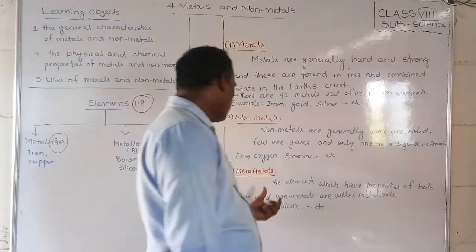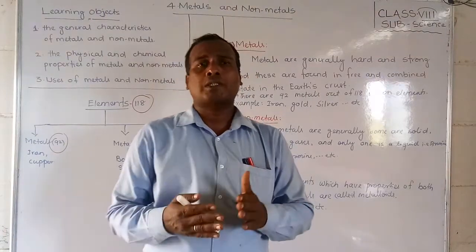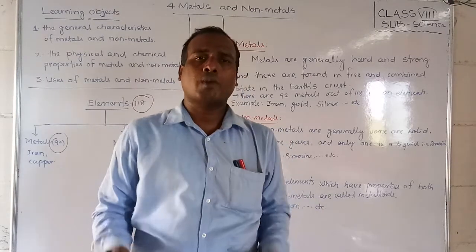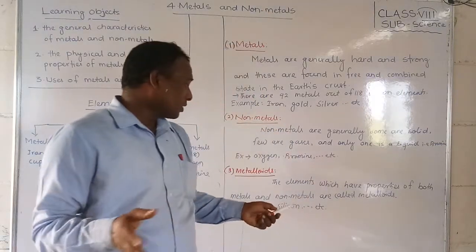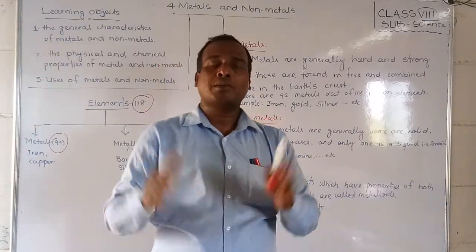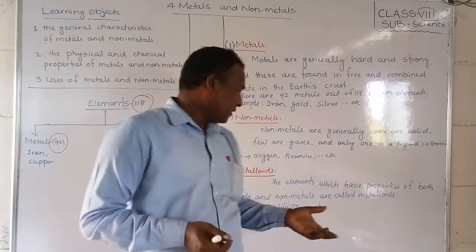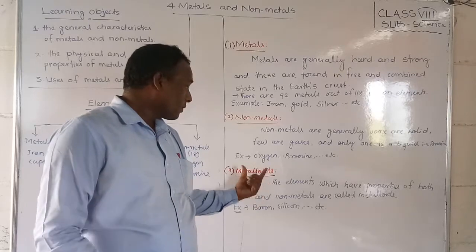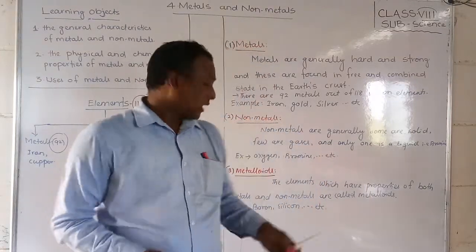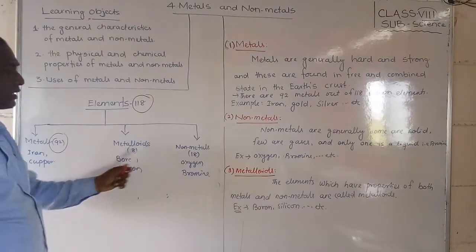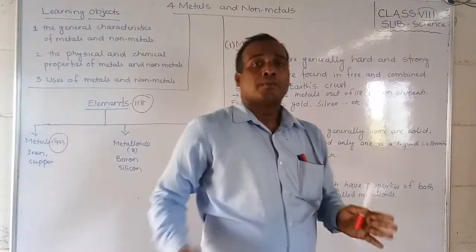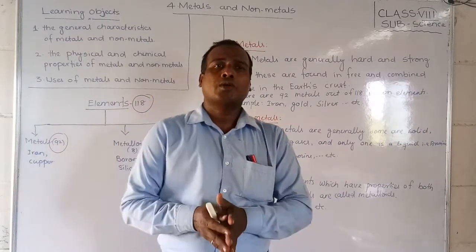What are metalloids? This is a very important topic. Metalloids are elements that have some properties of metals and some properties of non-metals. Substances that have both properties are called metalloids. They are generally semiconductor substances. Examples include boron, silicon, and arsenic. In the periodic table, metalloids are placed in the middle. There are generally 8 metalloids, and 92 metals.